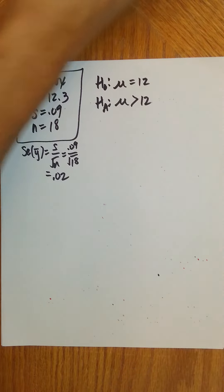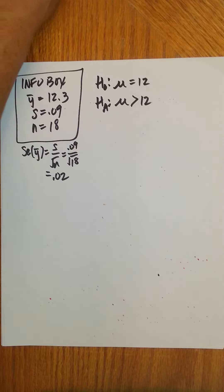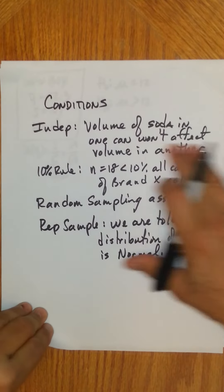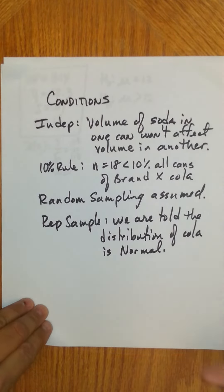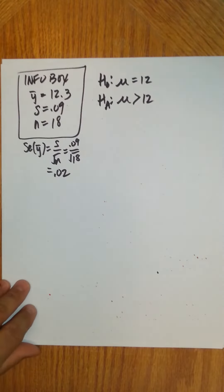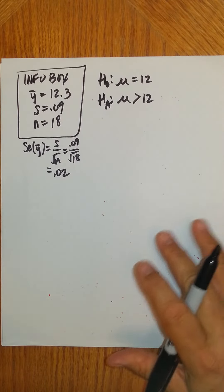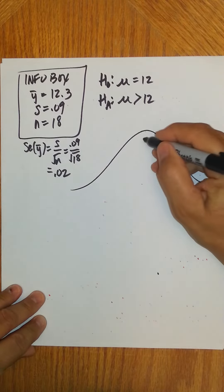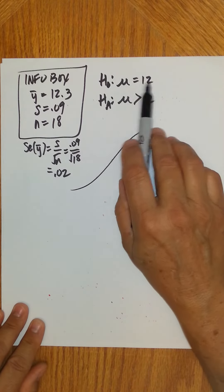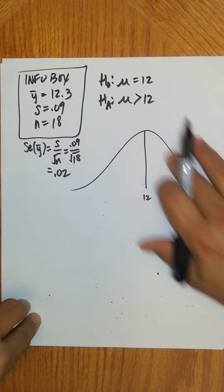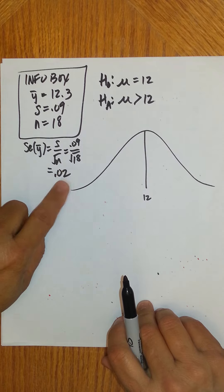Check conditions. The conditions are going to be the same as they were before. The volume of one can of soda won't affect another. 18 is less than 10% of all cans. Random sampling is easy and assumed. We're told the distribution is normal. So we're all good to go. Now, once we make conditions, I know what kind of sample means I should expect to see. If it's true that the average amount of soda is 12, then my sample means should cluster around 12 in a normal distribution and spread out by this standard error formula.